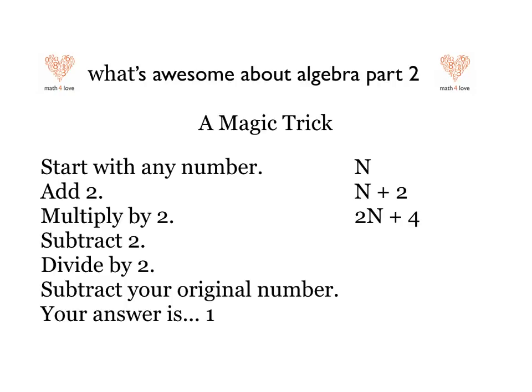I multiply it times 2, it's 2n plus 4 — same as it was with pi. I subtract 2, I get 2n plus 2 — same as with the pi symbol. Divide by 2: I cut each piece in half and get n plus 1. And I subtract the original number. If I take n away from that, I'm just left with 1.